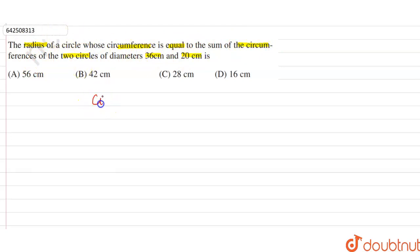Right, so the formula for calculating the circumference of a circle is 2πr. Now according to the question, let's take the radius of the circle whose radius we have to find as r.